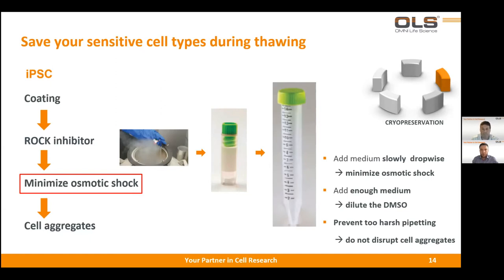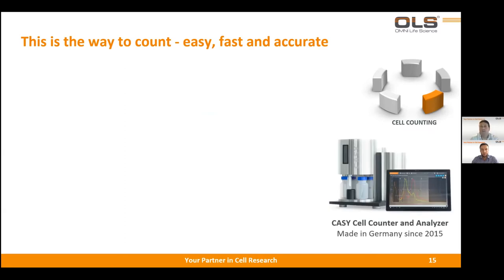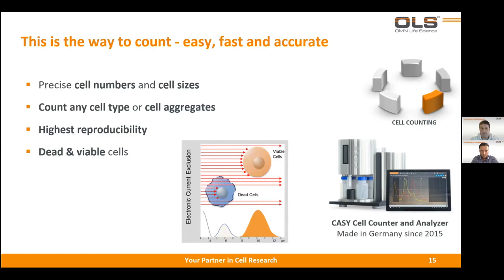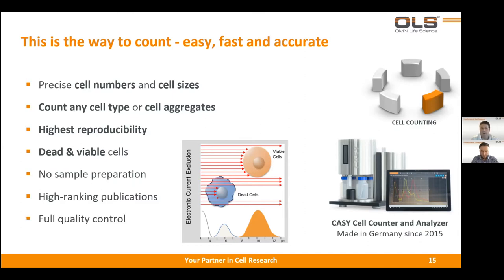After thawing the cells, what steps should be taken to perform experiments? At the beginning, it always makes sense to know the exact cell number. You can measure this with our KC cell counter and analyzer, produced by OLS Omni Life Science and manufactured in Germany. With the KC cell counter, you can precisely measure cell numbers and cell sizes. You can count any cell type or aggregates — mammalian cells, bacteria, fungi. It delivers highly reproducible data, distinguishes between dead and viable cells, and no sample preparation is necessary — no trypan blue required. Our KC cell counter is cited in high impact journals and provides full quality control.